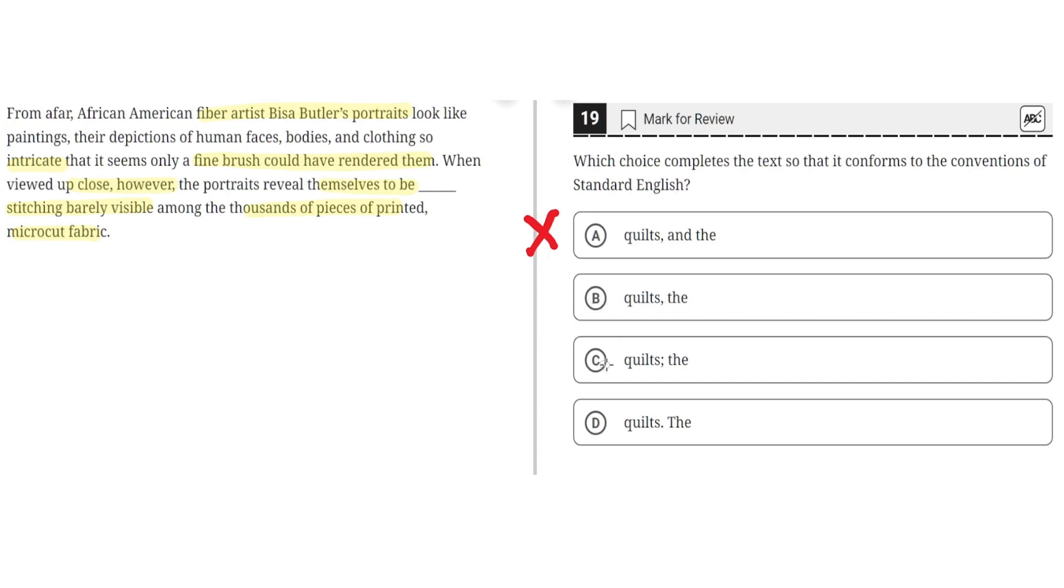So B seems to be the correct answer. C. Quilts, semicolon, the. This is incorrect because semicolons are used to split two independent clauses, but here there's only one independent clause, and then one supplementary phrase, so semicolon can't work here. So C is incorrect.